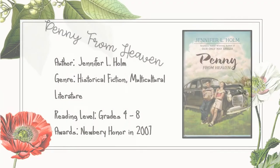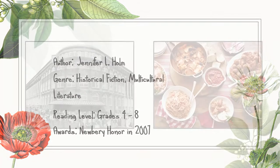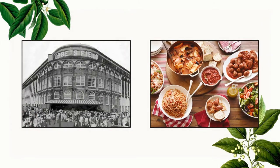The next text that I would like to share with you is Penny from Heaven by Jennifer Holm. Set in the 1950s, this story follows the coming of age of a young girl named Penny. Penny lives with her mother and her maternal grandparents, her father having passed away when she was a baby. He came from a large Italian family in which Penny is greatly loved, especially by her uncles. The reader is invited to follow her and her family through the unforgettable summer of 1953, a time filled with confusion and grief, but also love and experiences of growth that will change her life.